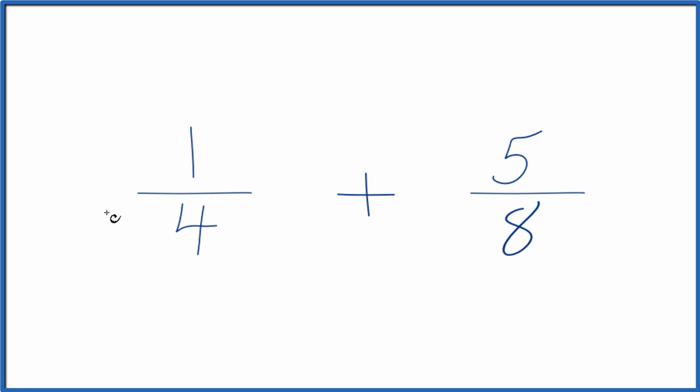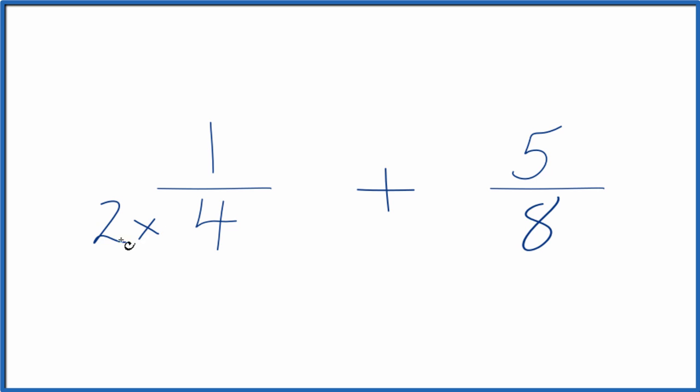Why don't we multiply 2 times 4? Because 2 times 4 would give us 8. Then we'd have the same denominator. But we can't just multiply the denominator here. We need to also multiply the numerator by 2.